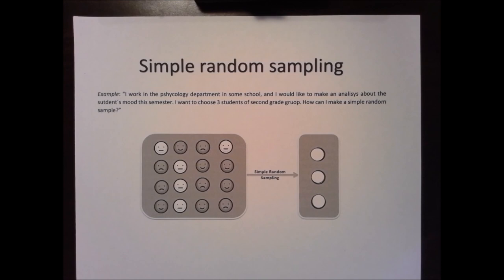Example: I work in the psychology department in a school and I would like to make an analysis about the students' mood this semester. I want to choose three students from a second-grade group. How can I make a simple random sample? As you can see here, we have a group of 16 students.